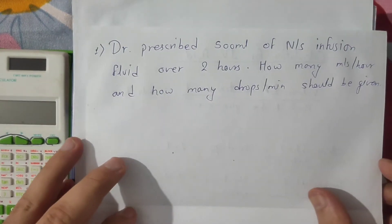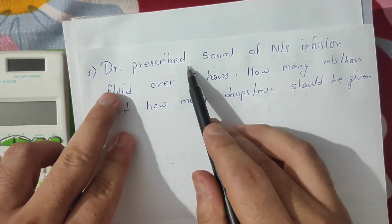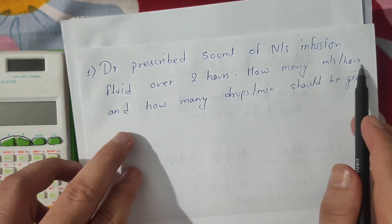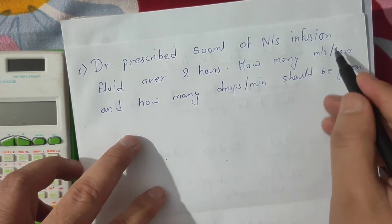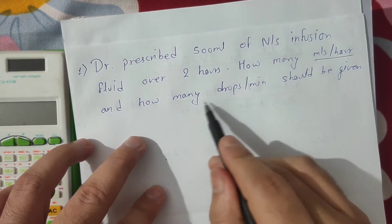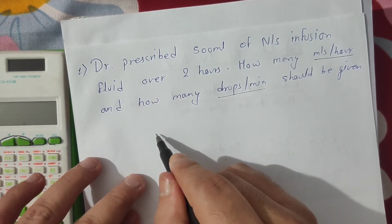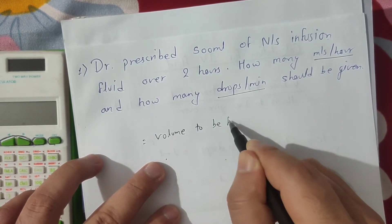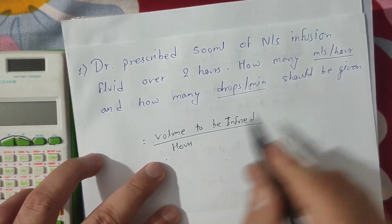Now we have two questions to practice. The first question is: a doctor prescribed 500 ml of normal saline infusion fluid over 2 hours. How many milliliters per hour and how many drops per minute should be given? There are two parts: we have to find milliliters per hour and drops per minute. The formula to use is volume to be infused divided by hours to be given over.